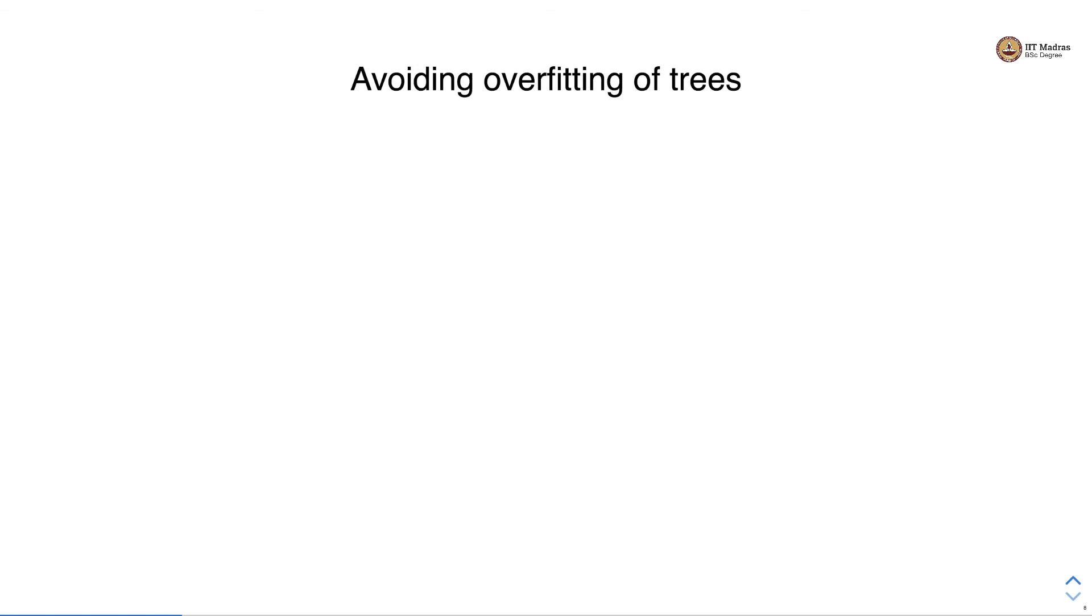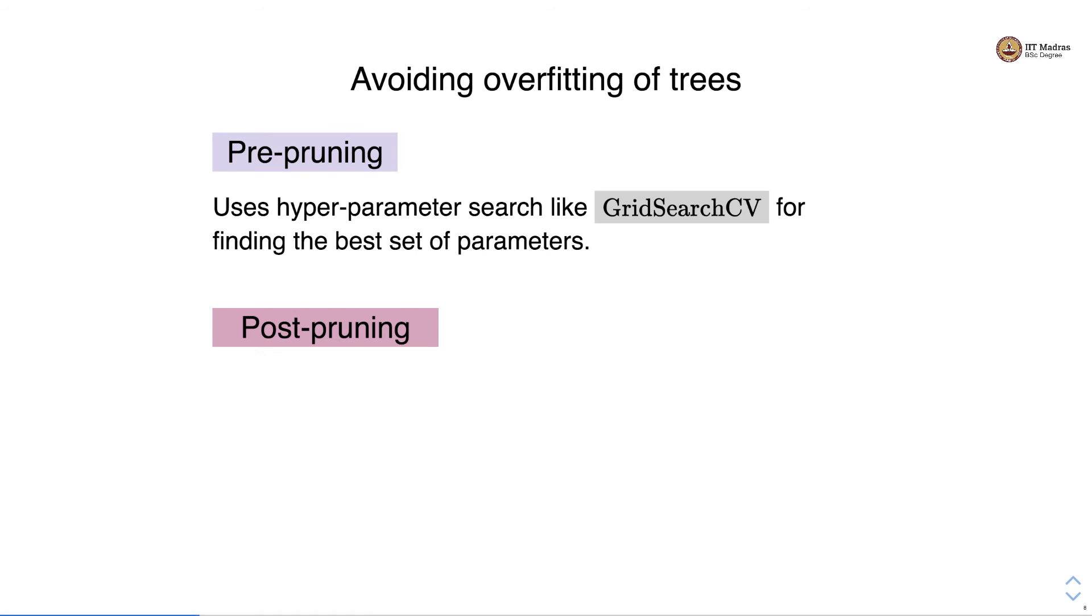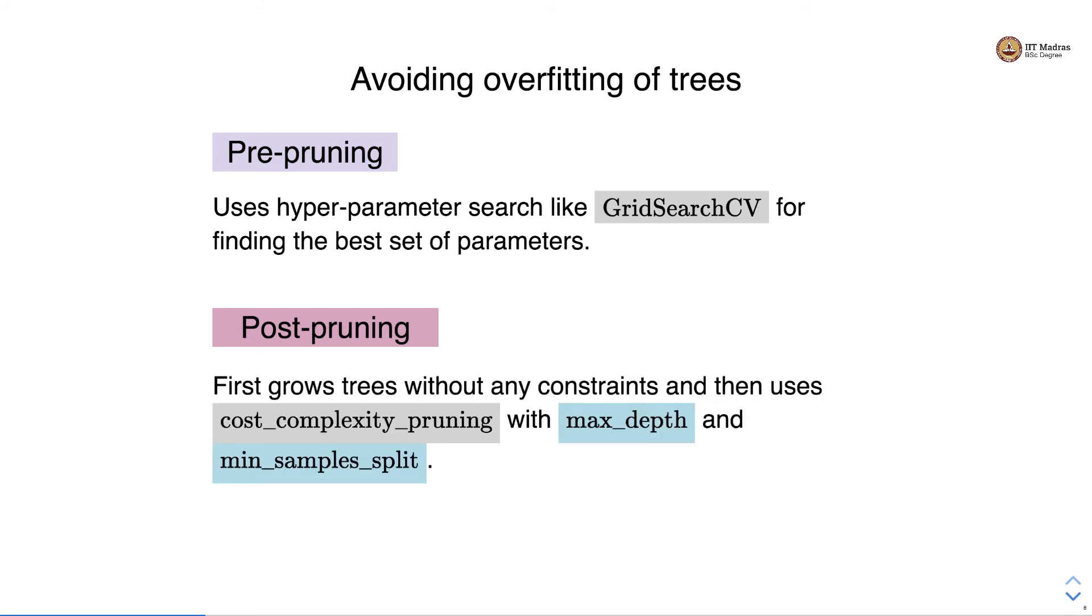Let's see how to avoid overfitting of trees. Overfitting is one of the issues that tree models can face. There are two strategies for avoiding overfitting of trees: pre-pruning and post-pruning. In pre-pruning we use hyper parameter search like GridSearchCV for finding the best set of parameters. Post-pruning first grows trees without any constraints and then uses cost complexity pruning with max_depth and min_samples_split parameters.